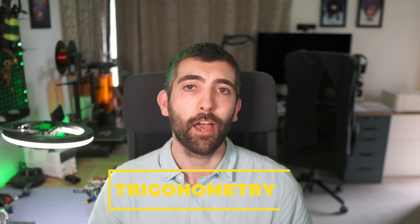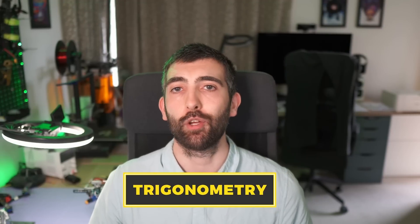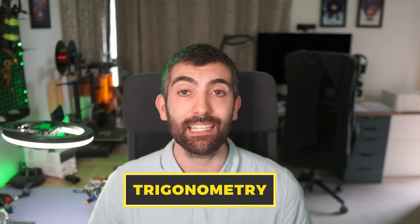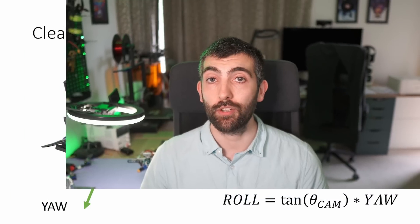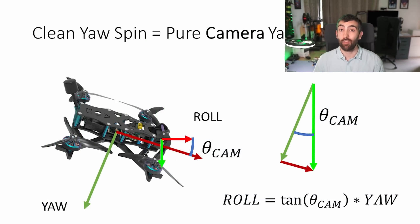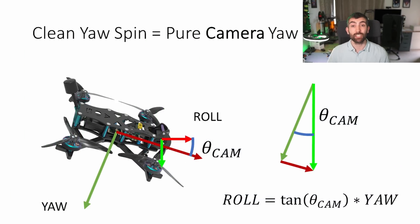This is where a little bit of vector mathematics can really help us out. With a little bit of trigonometry it's easy enough to calculate the amount of roll rate needed to coordinate a yaw spin. All we need to know is the camera up tilt, and then the roll rate is just the yaw rate multiplied by the tangent of that camera up tilt.